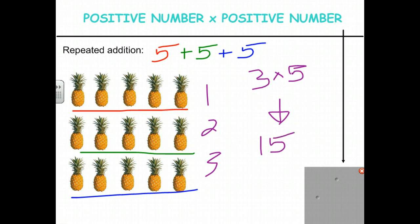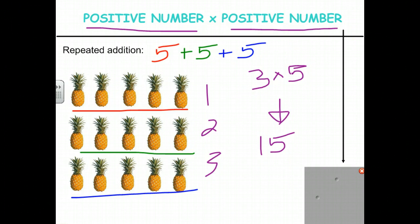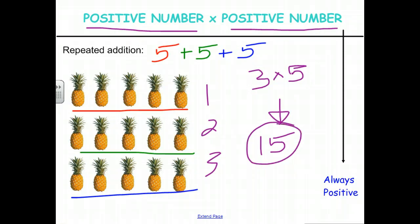In the end that's 15. Now, this is a positive number times a positive number, and as we can see we have a tangible number of pineapples — that means we have a positive number. A positive number times a positive number is always positive.